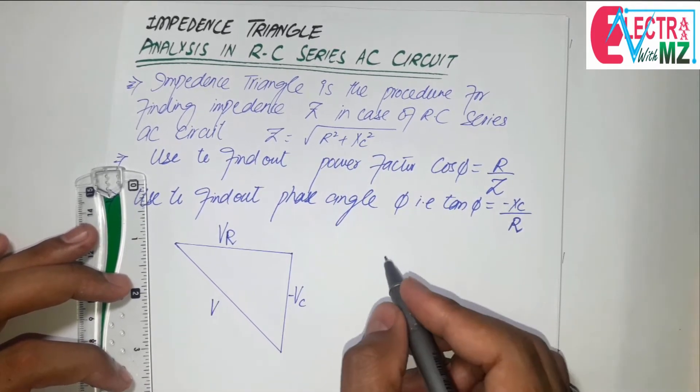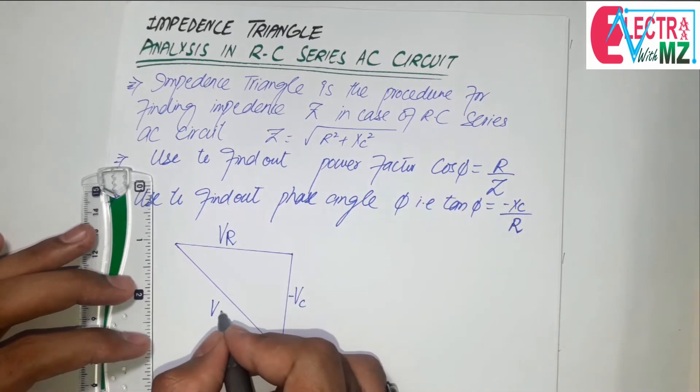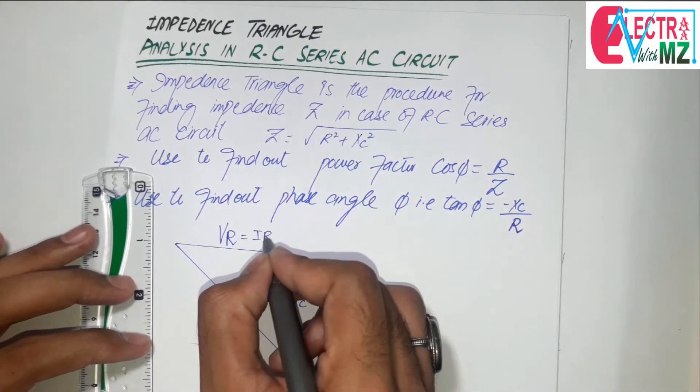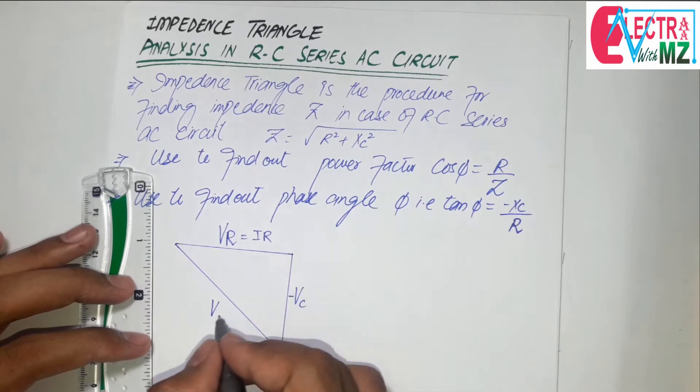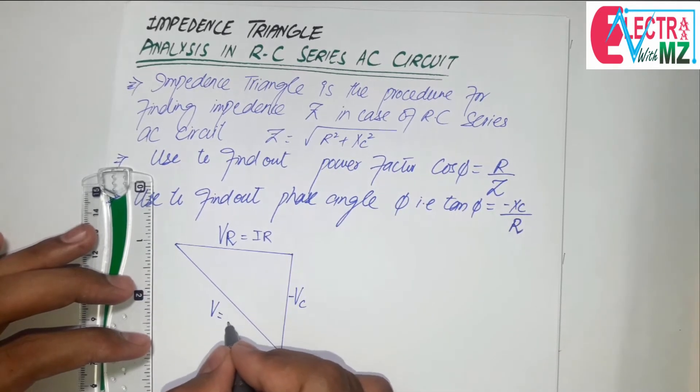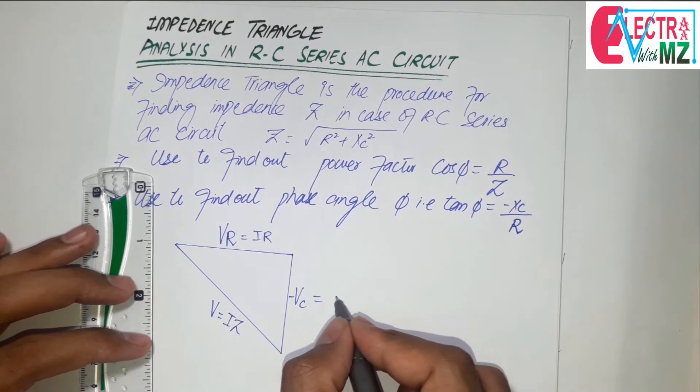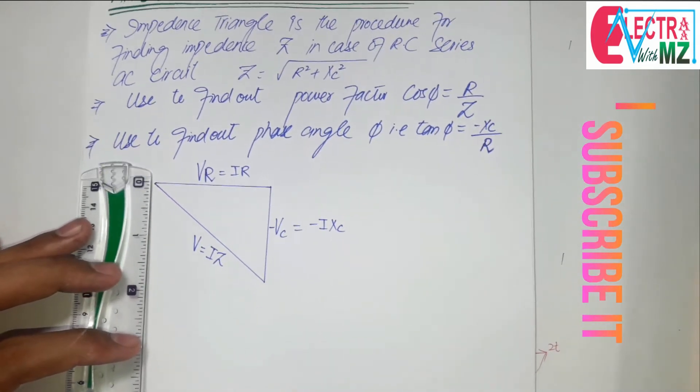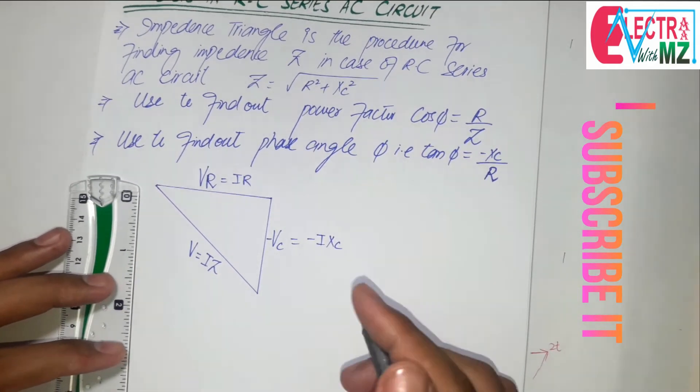So we know that VR is equal to IR, V is equal to IZ, and VC is equal to minus IXC.